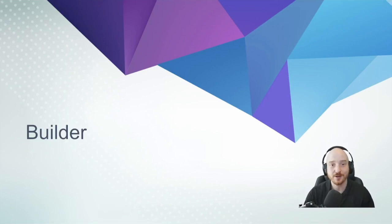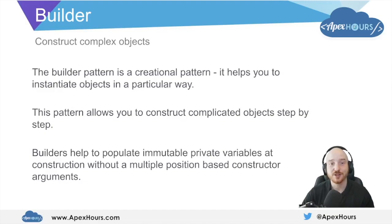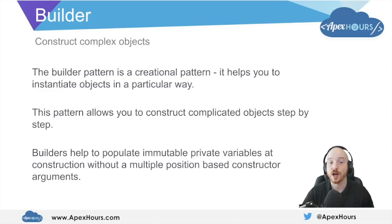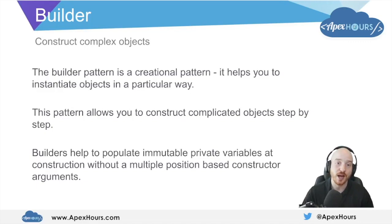So what is the builder pattern? The builder pattern helps us to construct complex objects. This means that the builder pattern is a creational pattern, which helps you to instantiate objects in a particular way. This is very similar to how the singleton pattern is a creational pattern — they help you to instantiate an object in a particular way. The builder pattern allows you to construct complicated objects step by step, and we use it by creating an additional class called a builder, and these builder classes help us to populate immutable private variables at construction time without having to worry about multiple position-based constructor arguments.